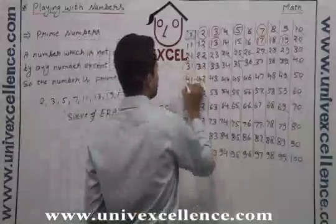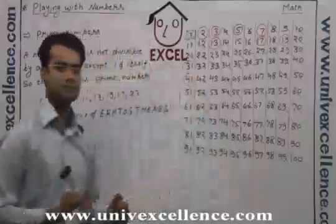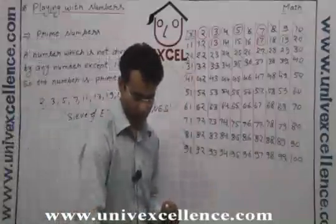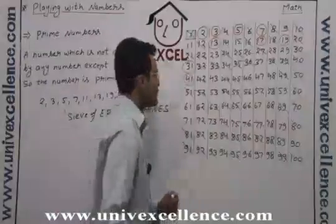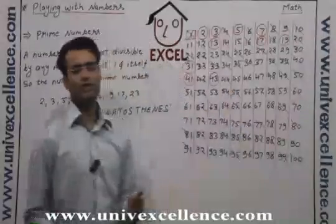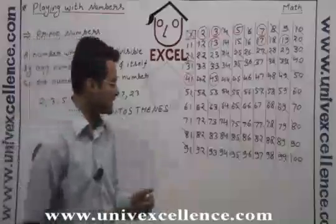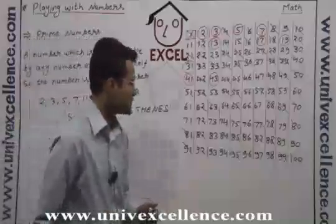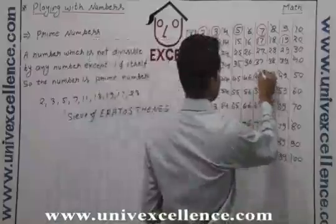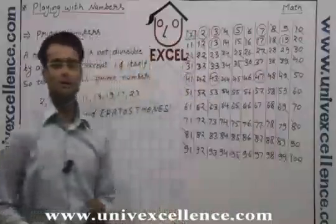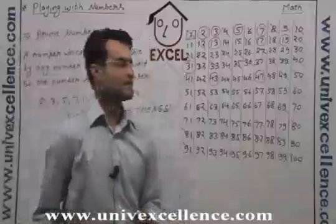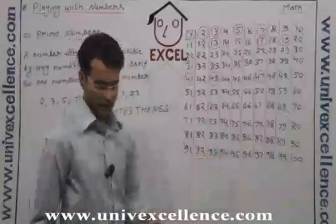Cut down the multiples of 41. Cut the multiples of 43 — so 43, it will be 86 only and 86 is already cut. For 47, what will be there? It is 94, which is already done.